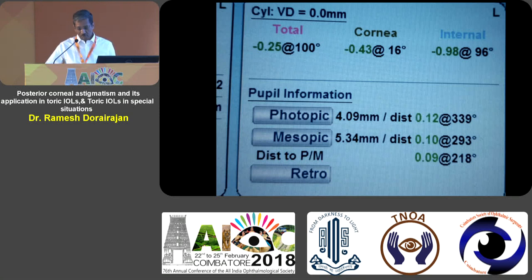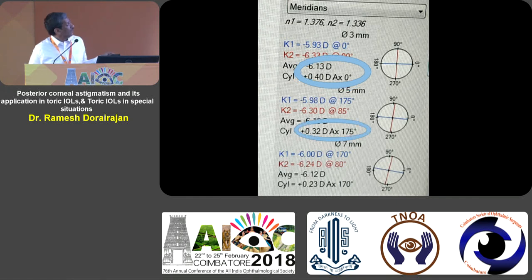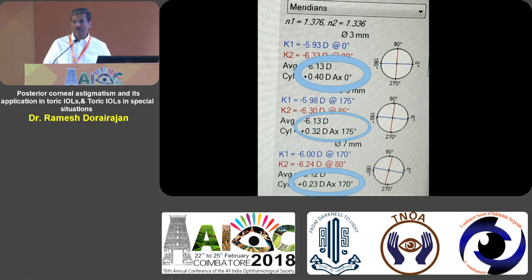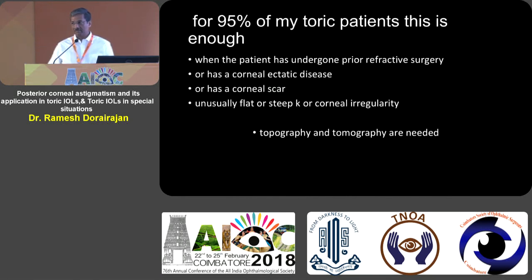This is the effect of posterior corneal cylinder. If you take the back of my cornea, the 3 mm reading has a plus 0.4 cylinder; the 5 mm diameter has plus 0.3; and the 7 mm diameter has plus 0.2. So the posterior corneal cylinder astigmatism is not constant — it is not a fixed number. It varies from the visual axis. The cornea is not a perfect optical system; it has different powers at different distances from the visual axis.